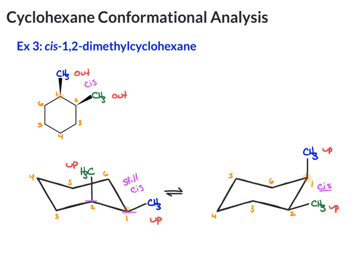Now, if you try to compare these two conformations, we have an axial methyl and equatorial methyl. We have an axial methyl and equatorial methyl. These two are equal in energy, so one is not more stable than the other.